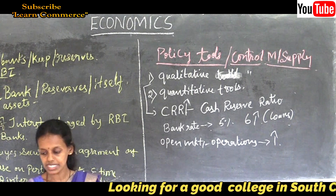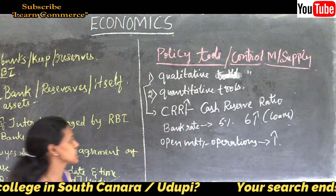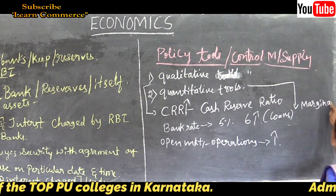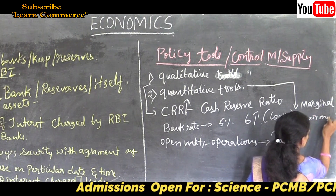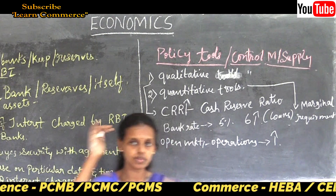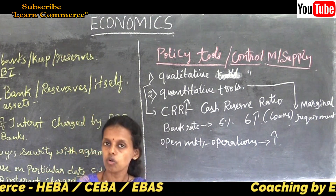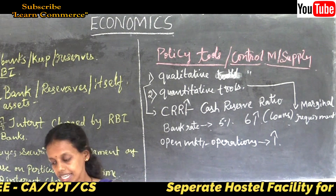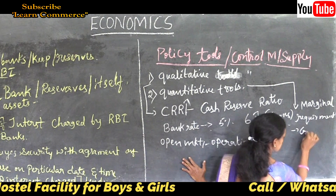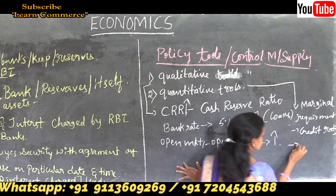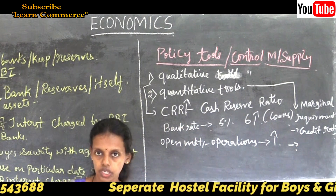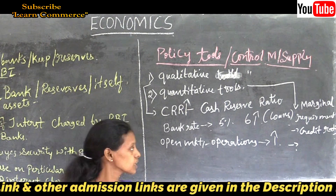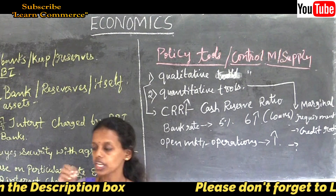Quantitative tools for money supply include marginal requirement — RBI assesses the maximum margin of money needed and supplies accordingly. Another tool is credit rationing — RBI evaluates whether a particular bank needs a specific loan based on their transactions, capacity, turnovers, customer base, and loan repayment history, and grants loans accordingly.